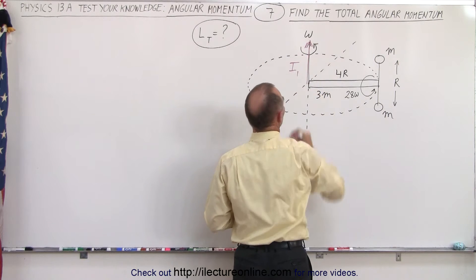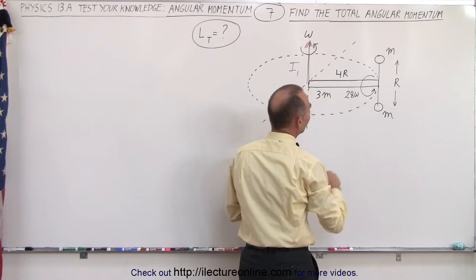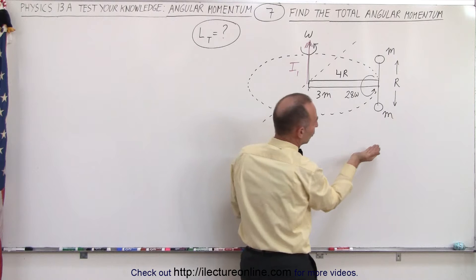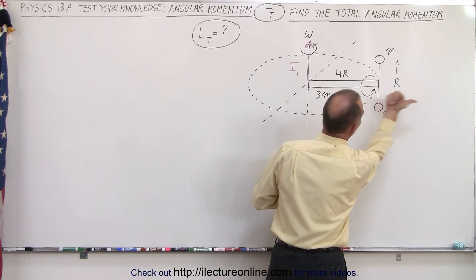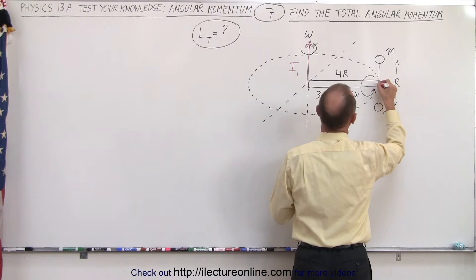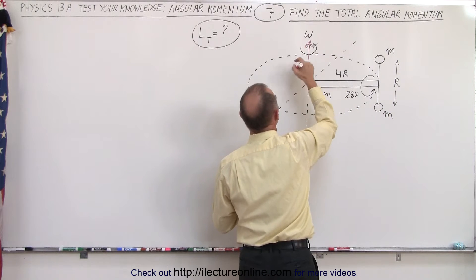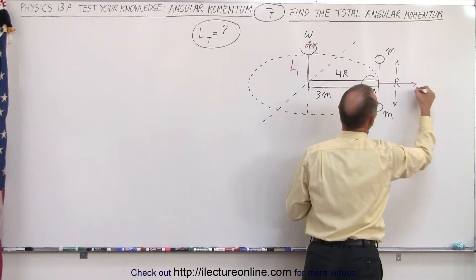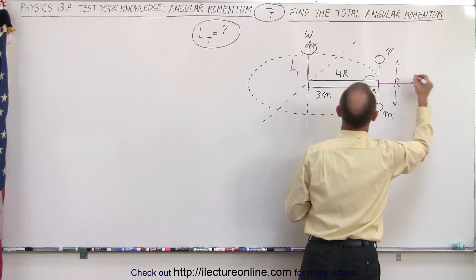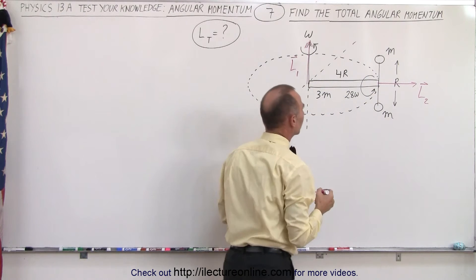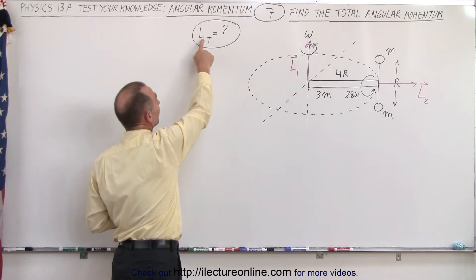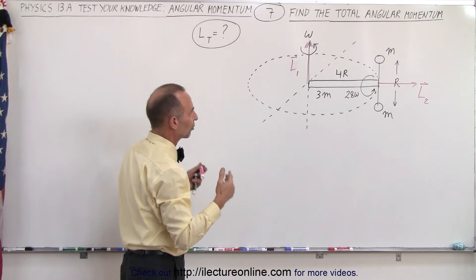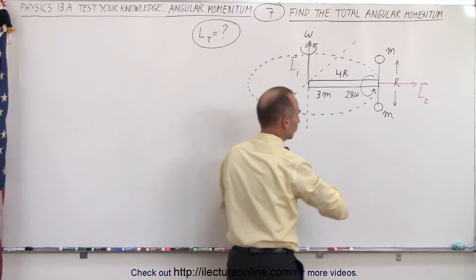Let's call it L1. Then we have a second angular momentum vector because the two masses are rotating about the end of the bar. If we take our fingers and curl them in the direction of rotation, we'll have an angular momentum vector outward. So these are of course vector quantities, and to find the total angular momentum we need to add those two up vectorially — it will be a vector sum between the two.